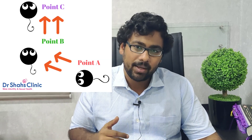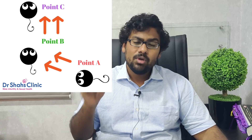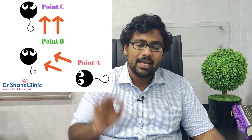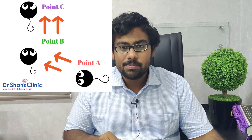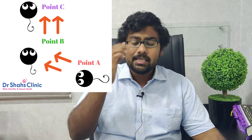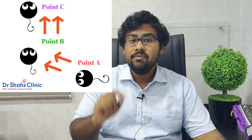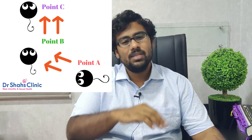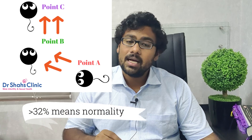In a particular high-power field as seen under the microscope — you can look at the image on the right — if a sperm moves from point A to point B, that sperm is scored as a progressively motile sperm. The patient is said to have normal sperm motility if the percentage of progressively motile sperm is more than 32%.